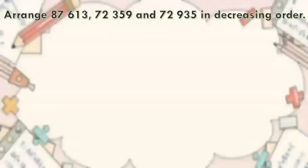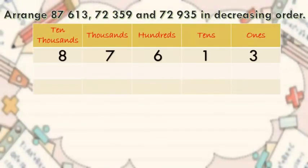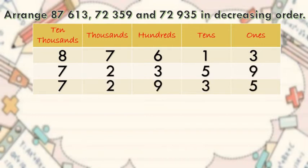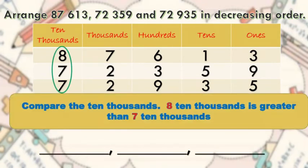Another example, let's arrange 87,613, 72,359, and 72,935 in decreasing order. When we say decreasing order, we're going to arrange it from the greatest to the smallest number. Compare the ten thousands: eight ten thousands is greater than seven ten thousands. Therefore, 87,613 is the greatest number.